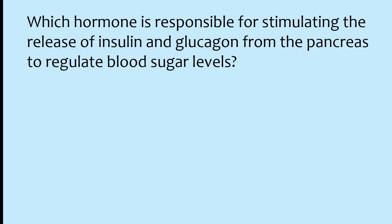Which hormone is responsible for stimulating the release of insulin and glucagon from the pancreas to regulate blood sugar levels? Options: cortisol, thyroxine, somatostatin, somatotrophin. The correct answer is option C: somatostatin hormone is responsible for stimulating the release of insulin and glucagon from the pancreas to regulate blood sugar levels.